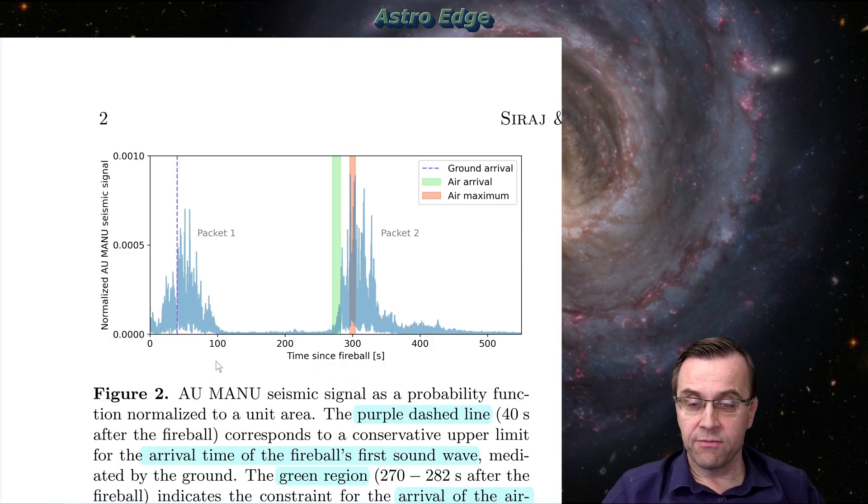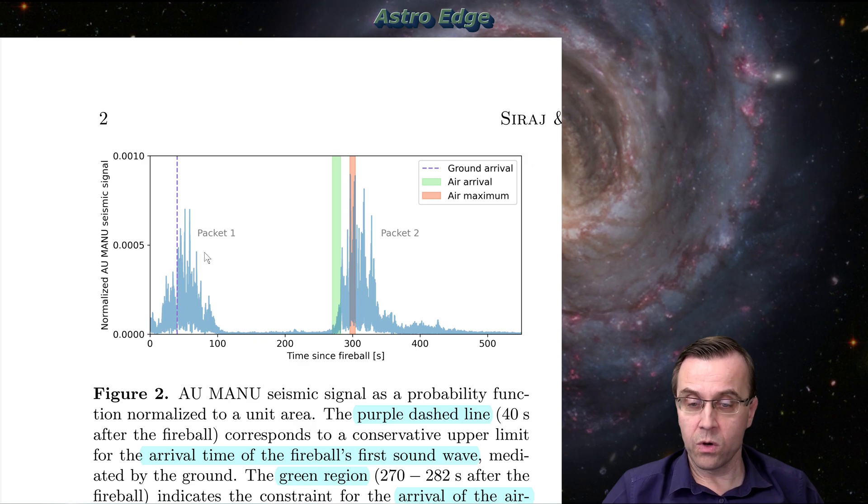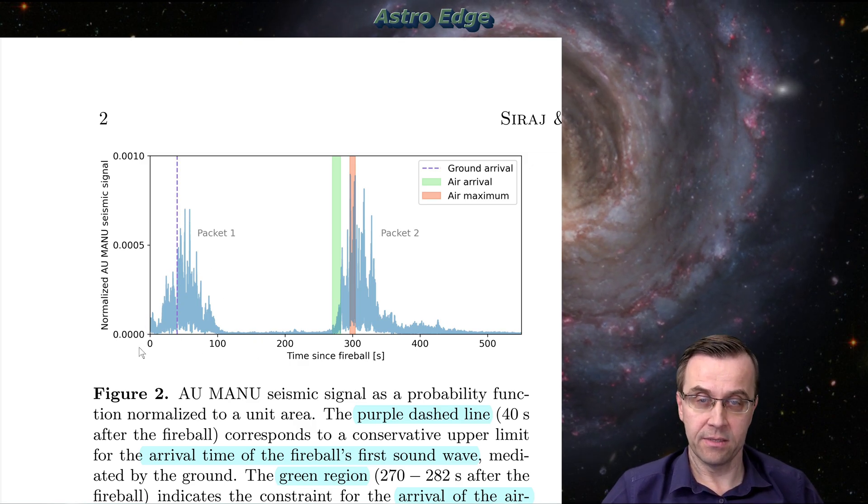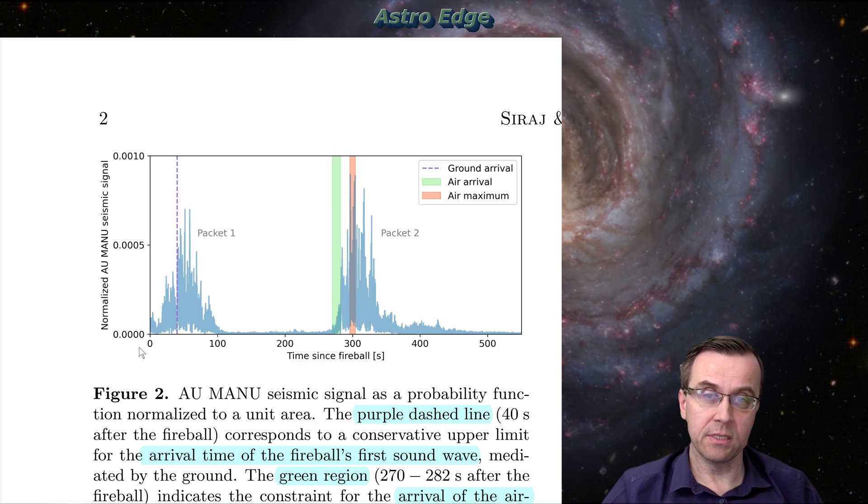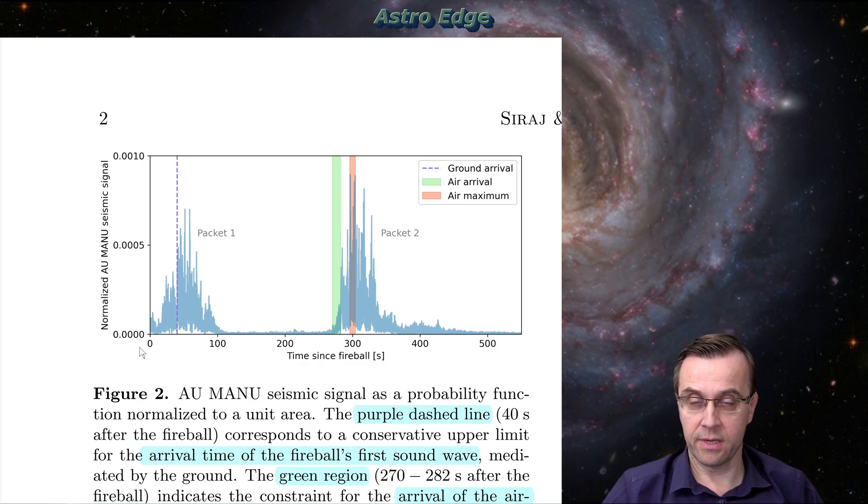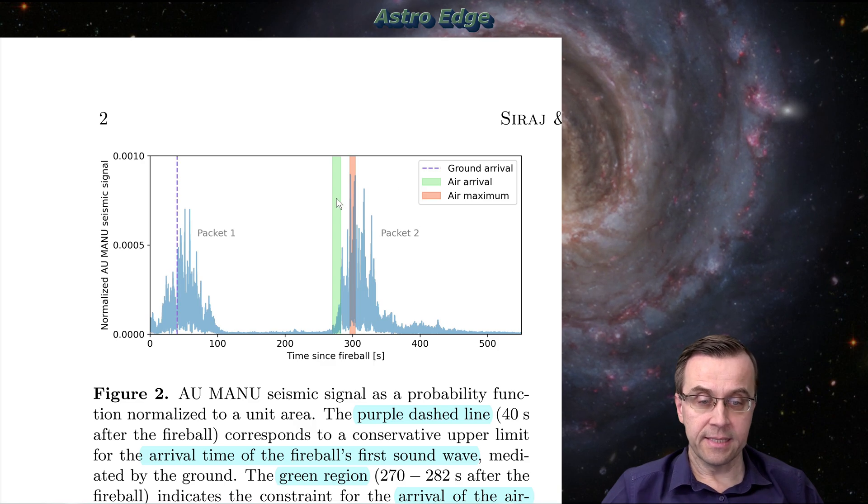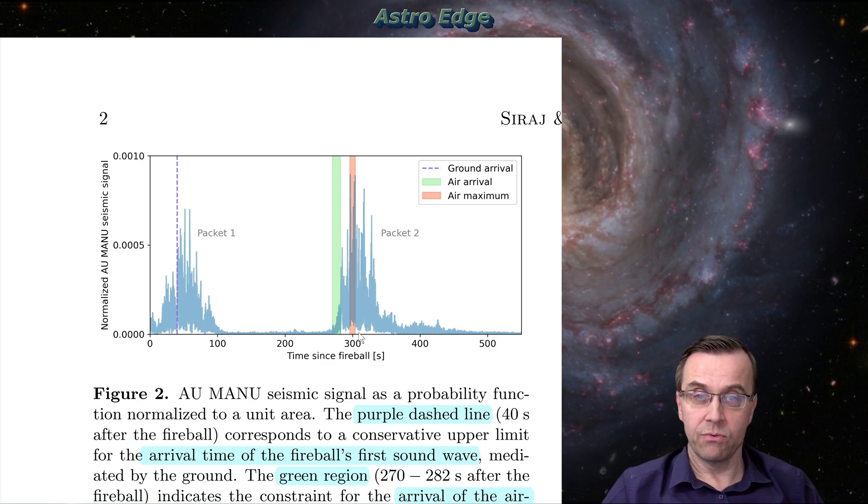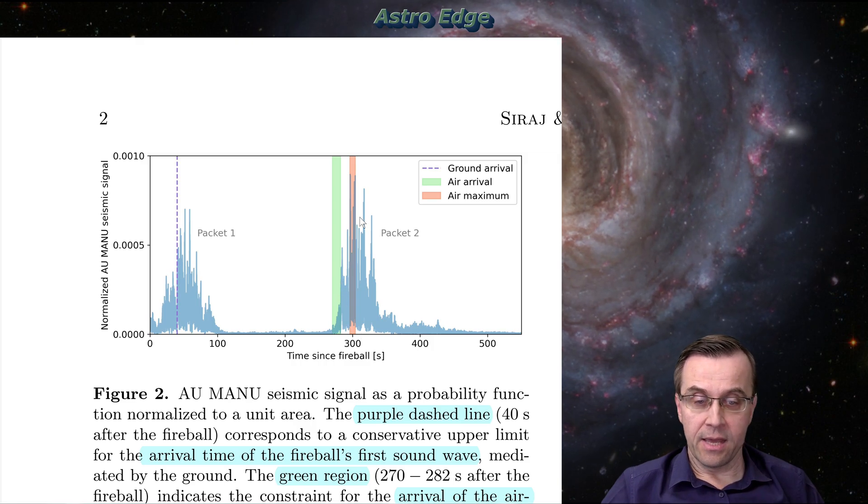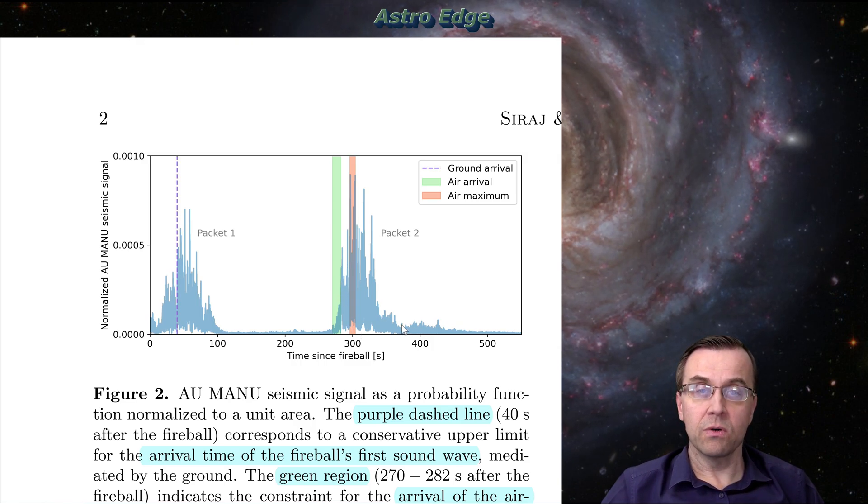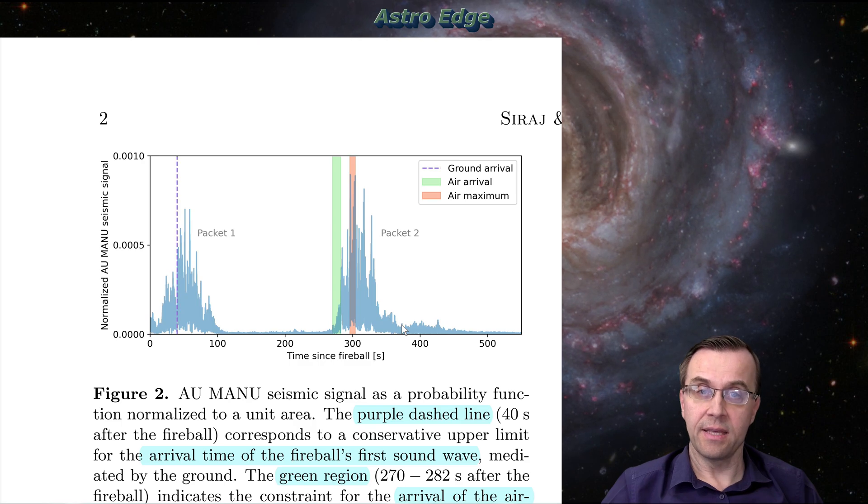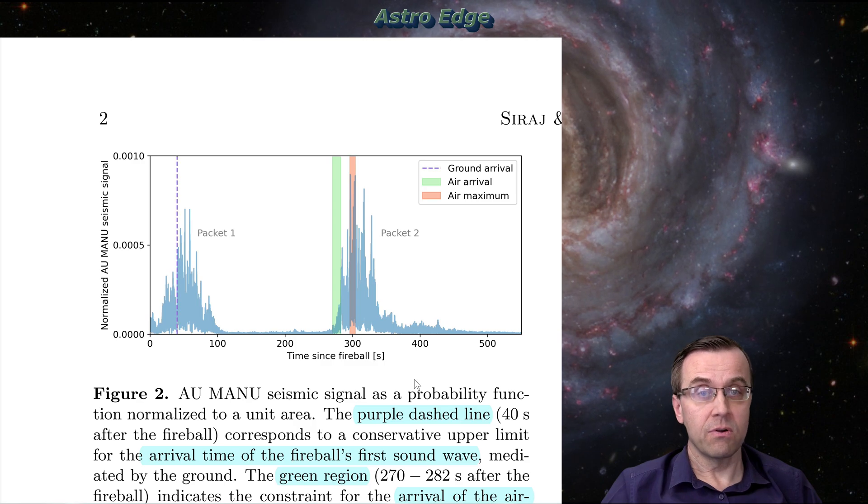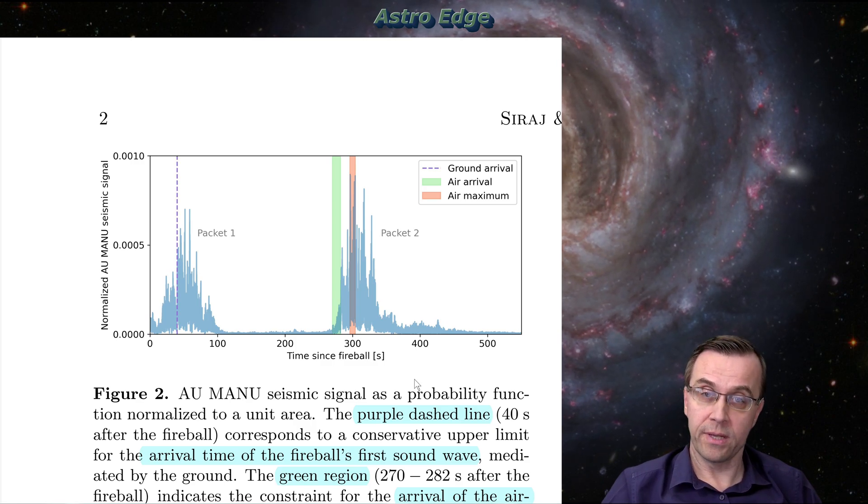So again, the first boom here was due to sound traveling mostly through the water and land. The speed of sound is much higher when it travels through water and ground. The second boom would correspond to the sound traveling through the air. And the reason it's so stretched out because there are different paths the sound can take through the air. It can go straight or it can get reflected from the water at different points.